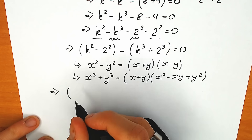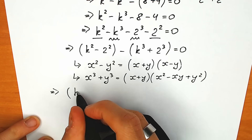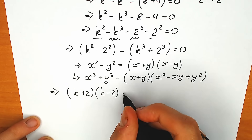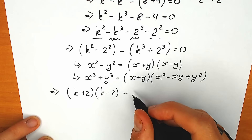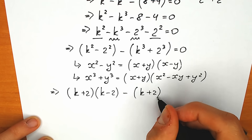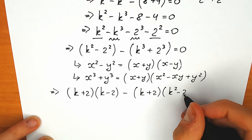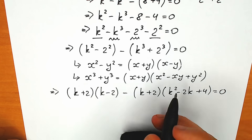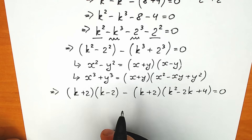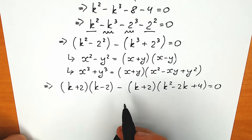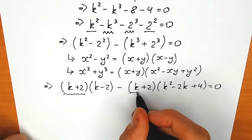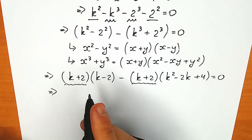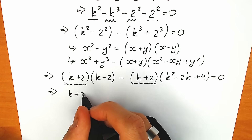For the first parenthesis, applying the difference of squares formula, we can write it as (k plus 2) times (k minus 2). And we have minus, then applying the sum of two cubes formula, we have (k plus 2) times (k-squared minus 2k plus 4), equal to zero. Now, because we have k plus 2 in both parts, we can factor out k plus 2 — this is an extremely important step.